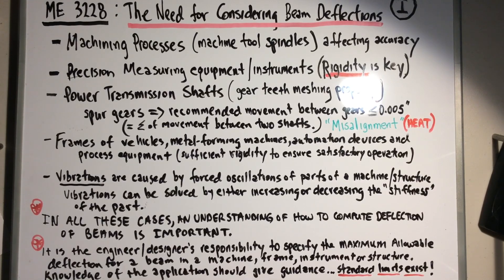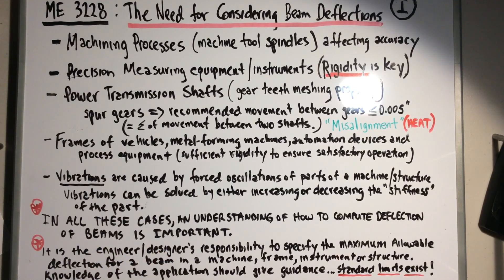Also, precision measuring equipment and instruments — metrology, which is the scientific study of measurements — requires everything in that instrument or piece of equipment to be extremely rigid. If you're trying to precisely measure something for accuracy and precision, you don't want any kind of variation or deflection. Rigidity in these types of devices is the key.